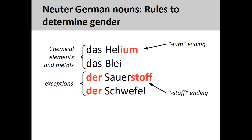Most of the chemical elements and metals are neuter, such as 'Helium' (helium) and 'Blei' (lead). Notable exceptions are nouns ending in '-stoff,' such as 'Sauerstoff' (oxygen), and a few other elements and metals such as 'Schwefel' (sulfur). A good rule to follow is that if the noun ends in '-ium,' it will be neuter.